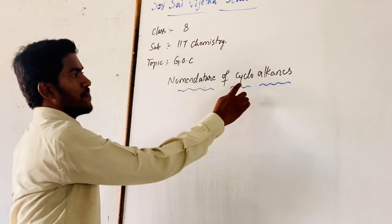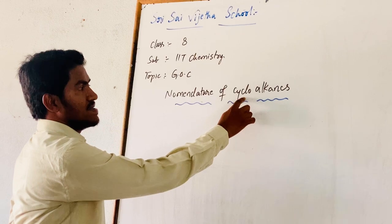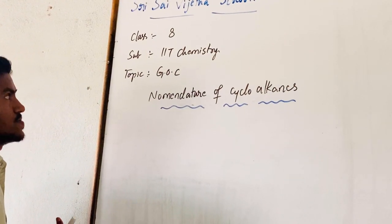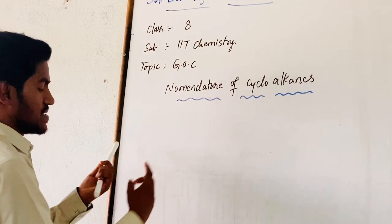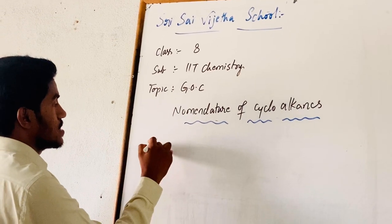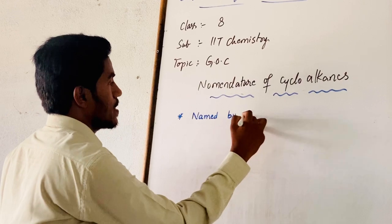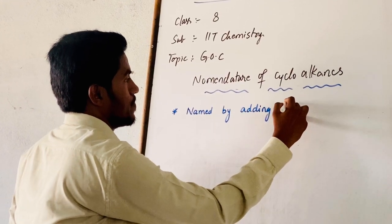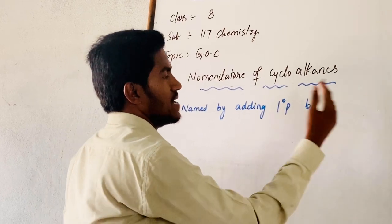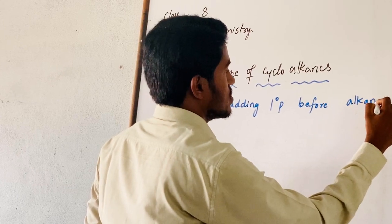For alkanes, the primary prefix is 'Cyclo' if it is a cyclic compound. The first rule is to add a bionic prefix — that is, the primary prefix — before the alkane carbon chain. For cycloalkanes, the prefix 'Cyclo' is placed before the alkane name.